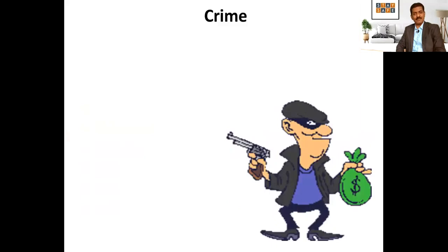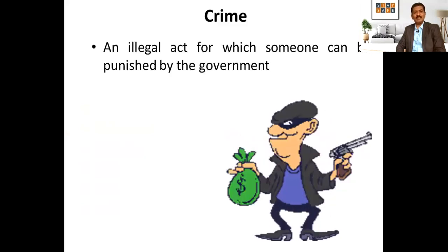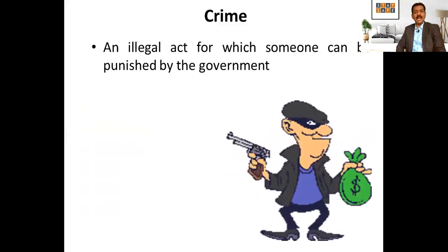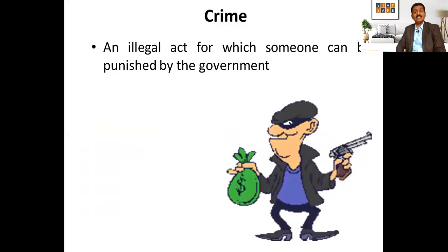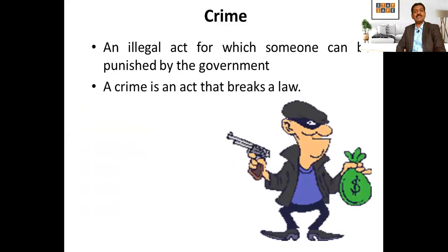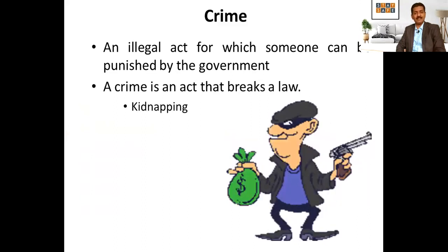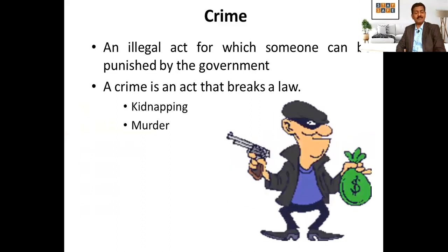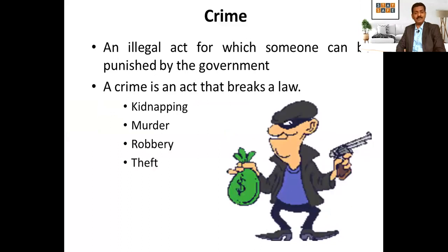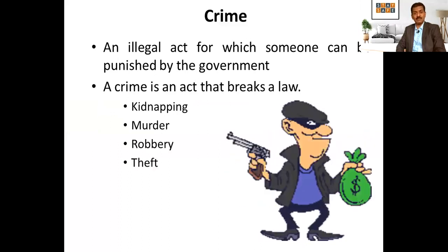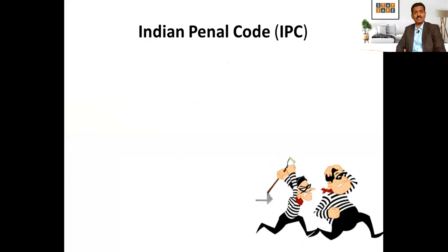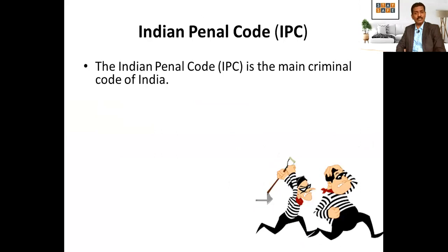Let us see what is crime. A crime is an illegal act for which someone can be punished by the government. A crime is an act that breaks a law. Kidnapping is a crime; murder, robbery, theft — these are all different trends we normally see in society. For these, India has its own code called the IPC, the Indian Penal Code.